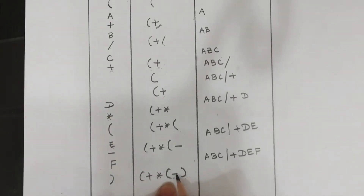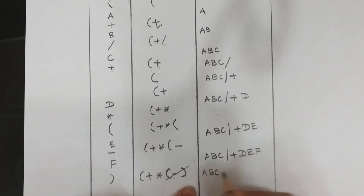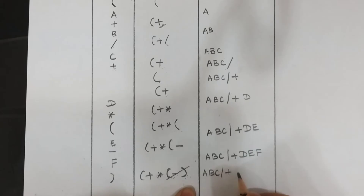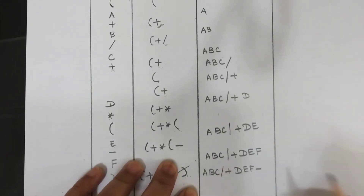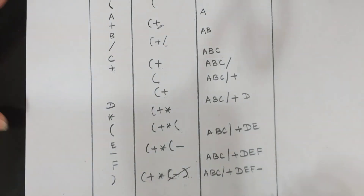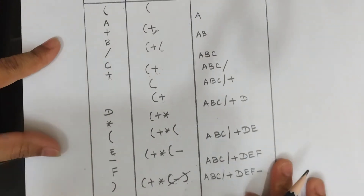In between these two parentheses there is only one operator — minus. Pop minus and append it to the postfix expression. After popping, it gets added to the postfix expression.